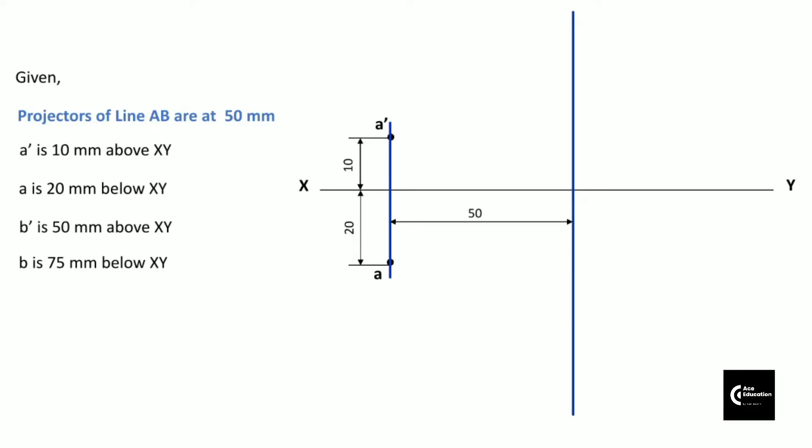Similarly, we can project point B dash and point B on its projector line. B dash is given 50mm above XY line. So at a distance of 50mm from XY line, we get locus of point B dash, and that point becomes B dash on projector line.